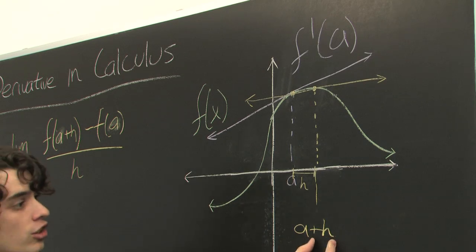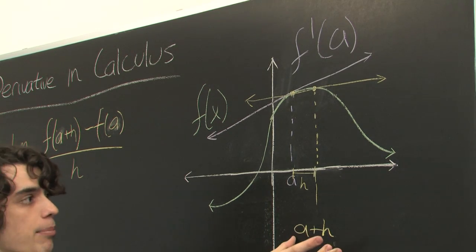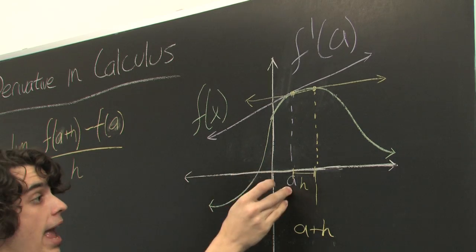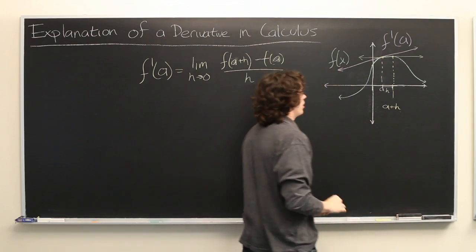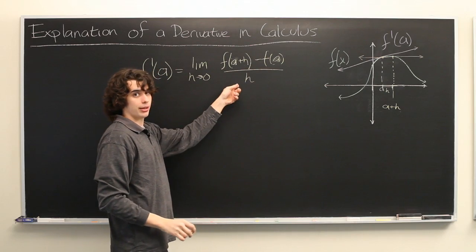As h gets closer and closer to zero, and as a plus h gets closer and closer to a, this secant line will approach the tangent line, which is how we arrive at this limit.